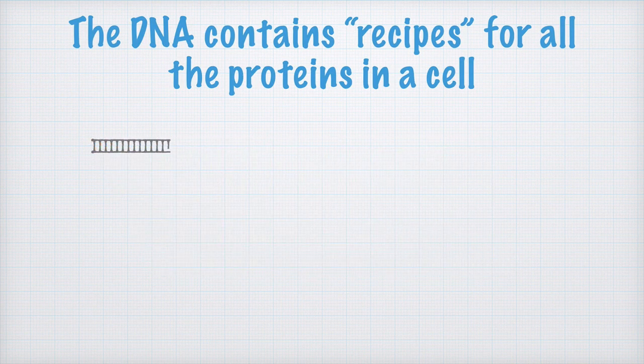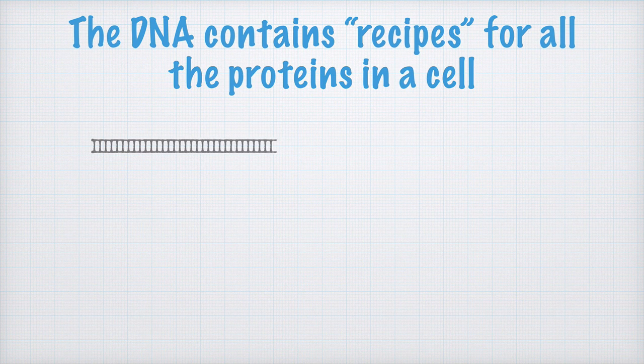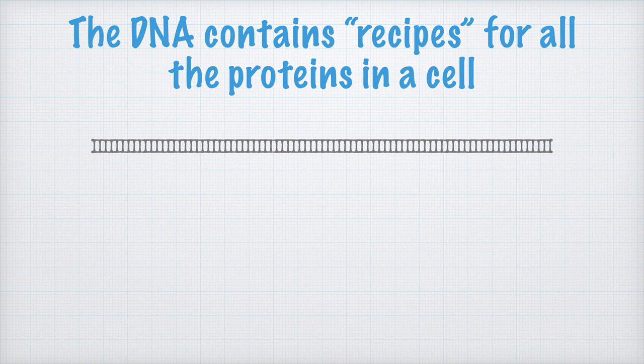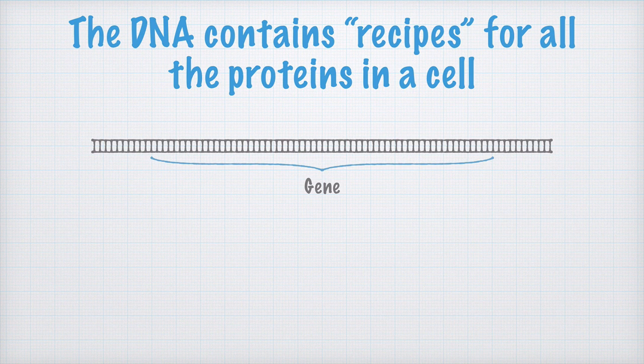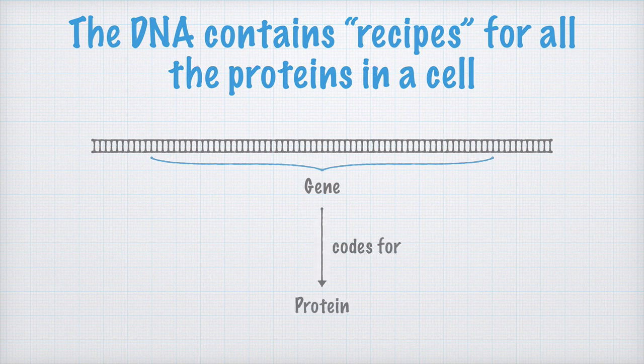Now we extend this to a much longer part of a DNA molecule. A certain part of a DNA molecule which carries this information or recipe for a protein, we call that a gene. The information is a sort of a code, and that's why we say that a certain gene codes for a certain protein.